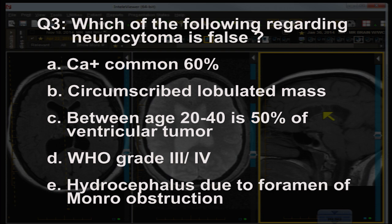Question three: which of the following regarding central neurocytoma is false? The answer is D) World Health Organization grade 3 or 4 — no, it is a WHO grade 2 lesion. Occasionally you'll find a more aggressive grade 3, but not grade 4. The other choices are all true.